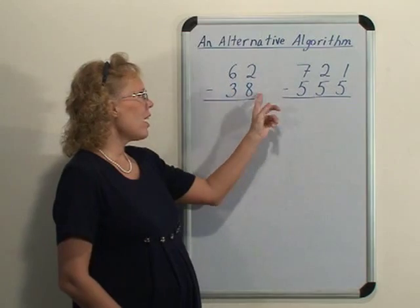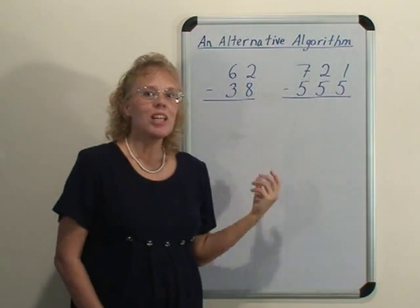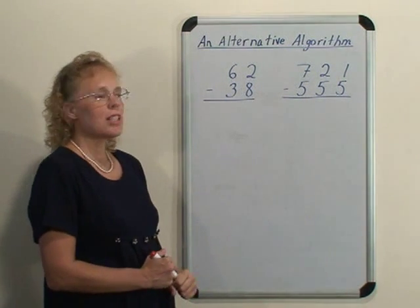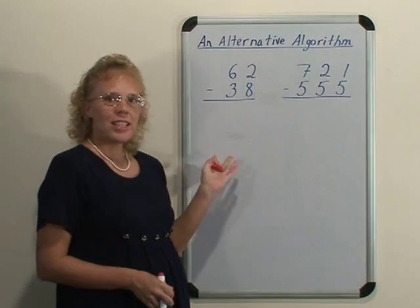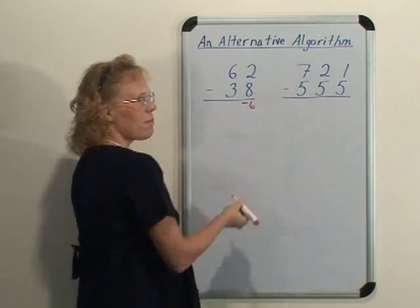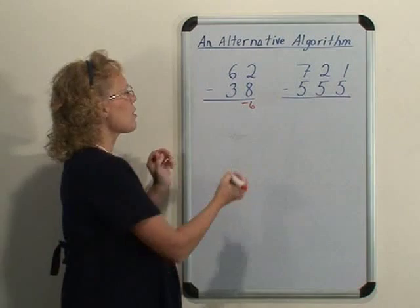Here we have 2 take away 8 which normally we say we can't do but in this algorithm we do it and we put 2 minus 8 is negative 6 so we write down negative 6 and then 6 minus 3 is 3.